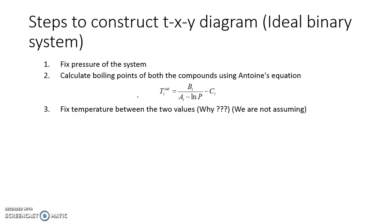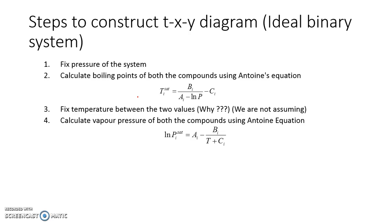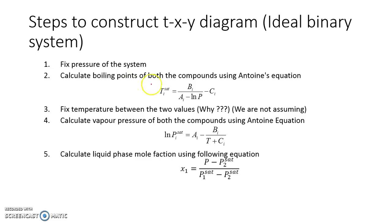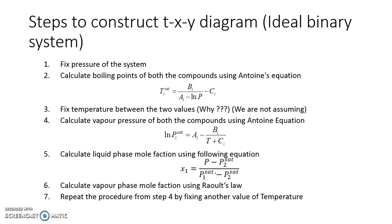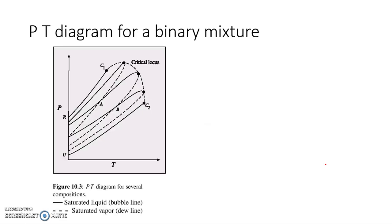I fix a temperature between these two extreme values, since the temperature for an ideal binary system will always lie between T1_sat and T2_sat. Now I have P and T — with only two degrees of freedom, I can't fix anything else. Manipulating Raoult's law, I calculate vapor pressure and then x1, where P, P1_sat, and P2_sat are all known. Once I know P, x1, and T, I calculate y1 as x1*P1_sat / P, then repeat by fixing another T value from T1_sat to T2_sat to get corresponding x and y values.